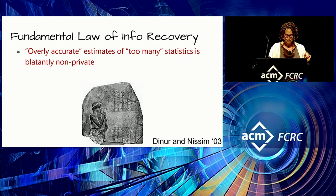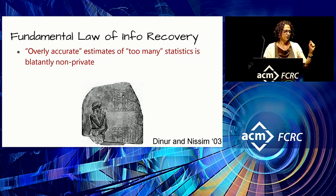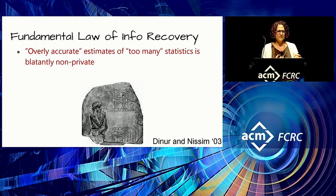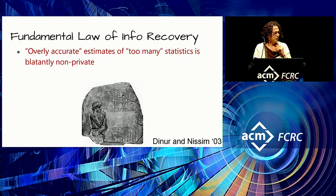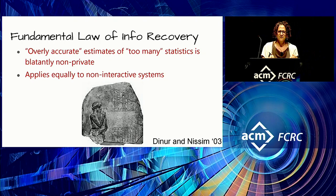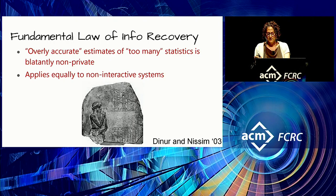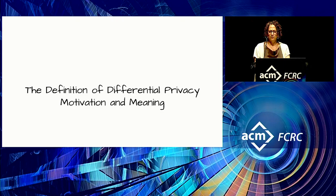This applies also to non-interactive systems where we might publish blobs, summary statistics, or synthetic data sets. If the synthetic data permit somebody to extract overly accurate estimates of too many statistics about the original population, then privacy can be completely compromised. That's what we're up against — this fundamental law of information recovery.